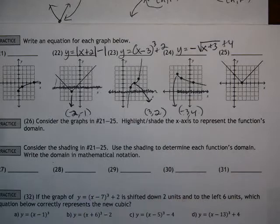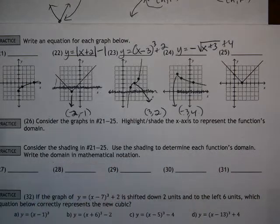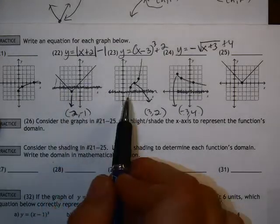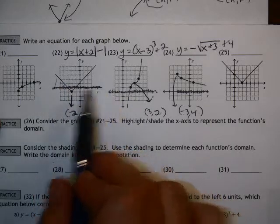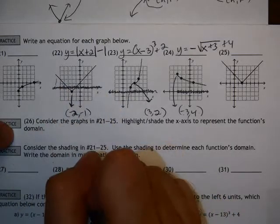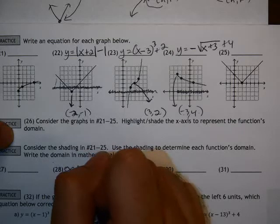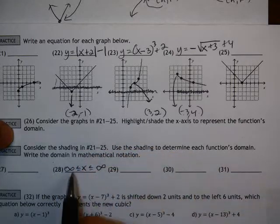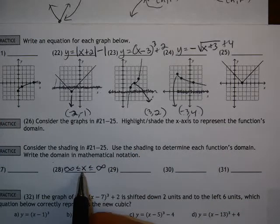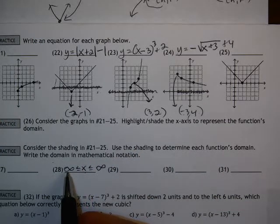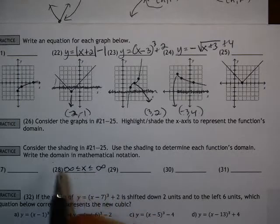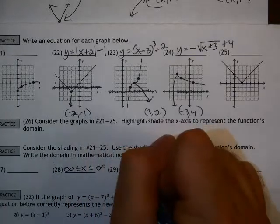Now for 28, 29, 30. Use the shading to determine each function's domain. Write the domain in mathematical notation. For the notation for these, both of these will end up being the same domain because they include literally every single x. Which means we're going to use the infinity symbols. Because when I show it this way, it's saying no matter what I have for x, to the left, I can go to the infinity, less than. To the right, I can go infinity, meaning I can use every single number and plug it in. So the same thing here, x in the middle, infinity symbol, infinity symbol.